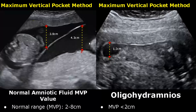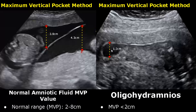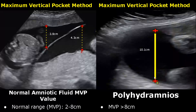For twin pregnancies, the maximum vertical pocket method, or MVP method, is used to assess amniotic fluid volume. The deepest vertical area free of fetal parts is measured. The normal range of MVP is from 2 to 8 centimeters. Oligohydramnios occurs when the MVP value is below 2 centimeters — a very small amount of amniotic fluid. In polyhydramnios, there is an excessive amount of amniotic fluid and the MVP value will be greater than 8 centimeters.